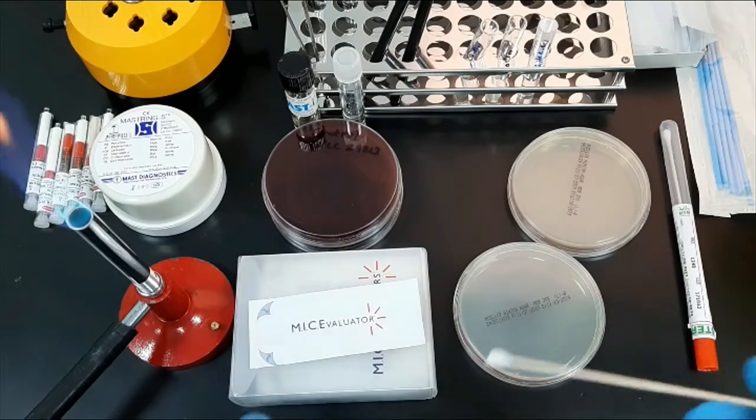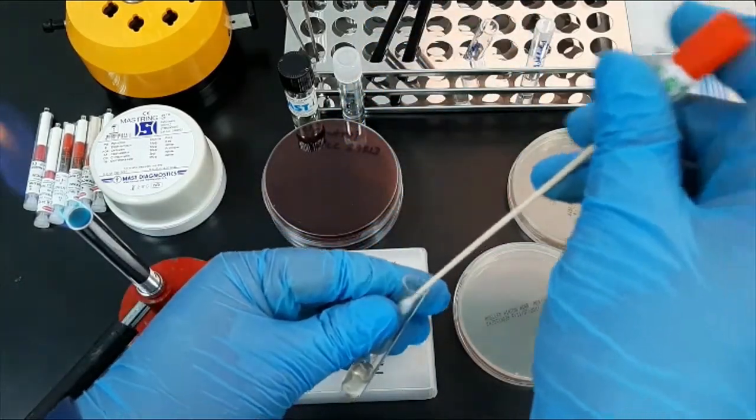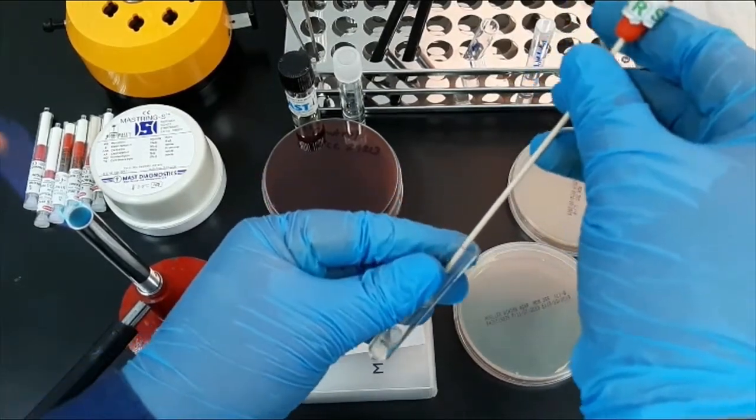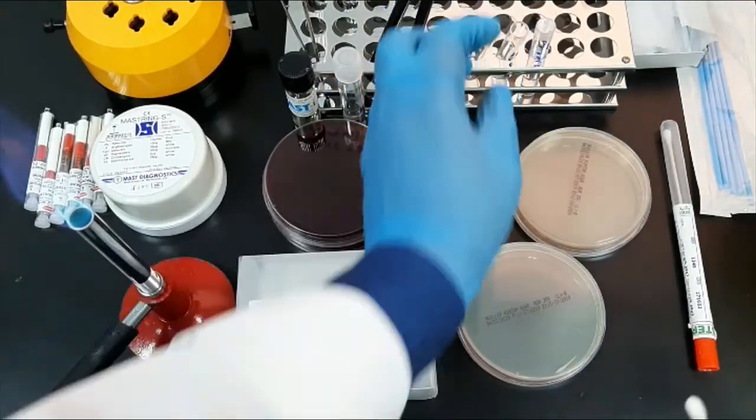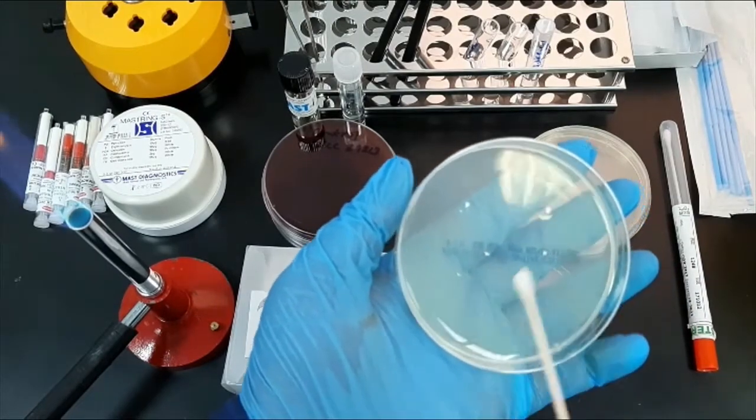Let's start the procedure. Pick up a sterile cotton swab and the bacterial suspension. Dip the swab into the bacterial growth, and when you take it out, remove any excess liquid by pressing the swab against the side wall of the tube. Then open the plate and inoculate the lawn culture.